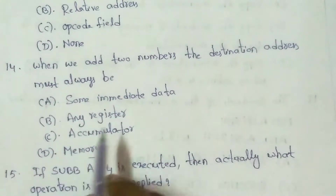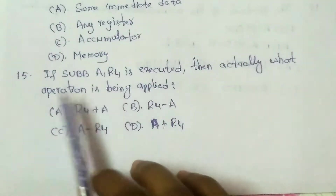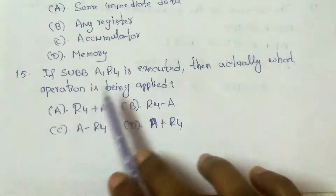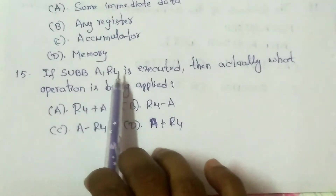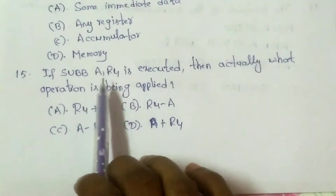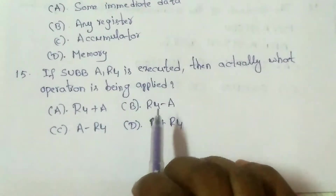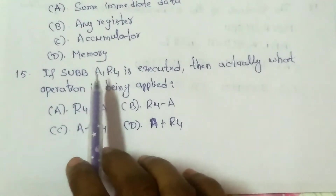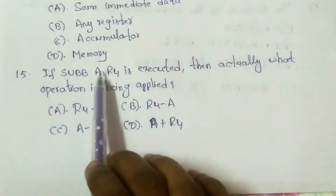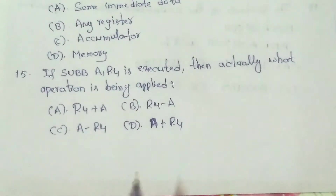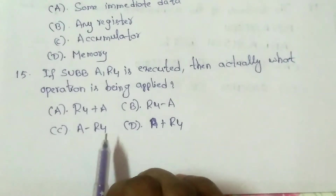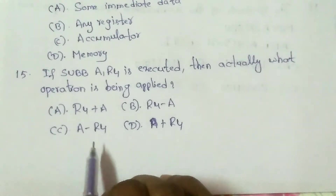Next question: If SUBB A, R4 is executed, what operation is actually being performed? The instruction subtracts the data in R4 from the data in the accumulator A. The result is A minus R4. Answer: option C, A minus R4.